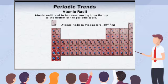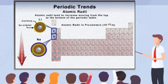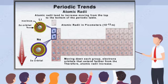Atomic radii typically increase moving down each group. This trend occurs because new energy levels extending farther from the nucleus gain electrons as you move down the periodic table. Electrons in higher energy levels are farther from the nucleus, and thus the size of the atom increases. In other words, atomic radii become larger as you move down a group because electrons are in orbitals that are farther from the nucleus.